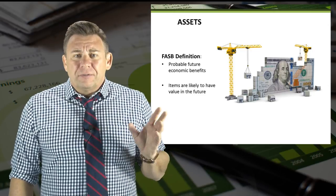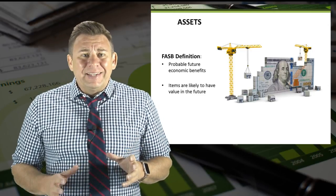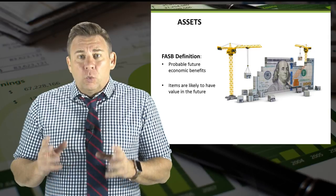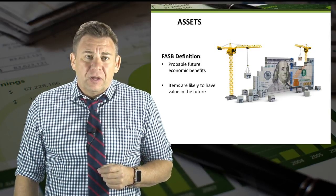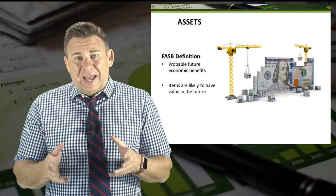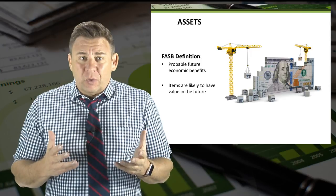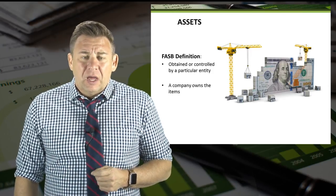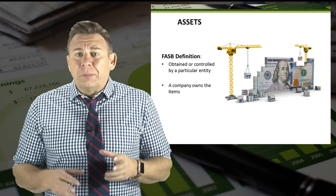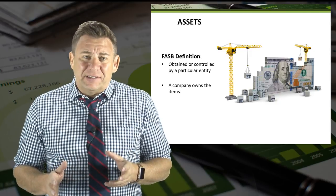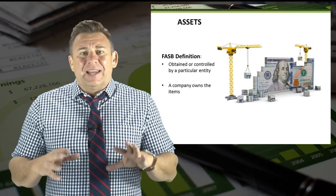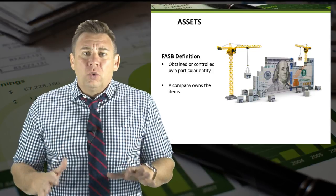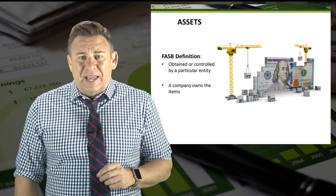Probable future economic benefit means that an item will probably be worth something in the future. If you have an item that is described this way, you probably have an asset. Obtained or controlled by a particular entity means at an accounting principles level that a company owns the item that has value.